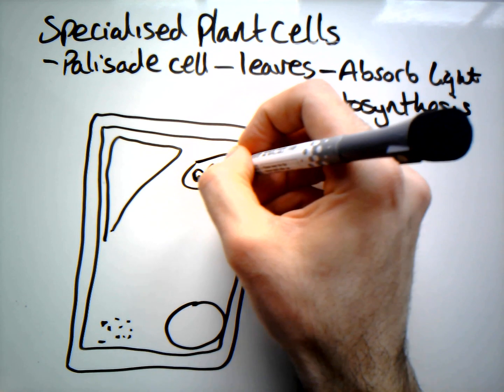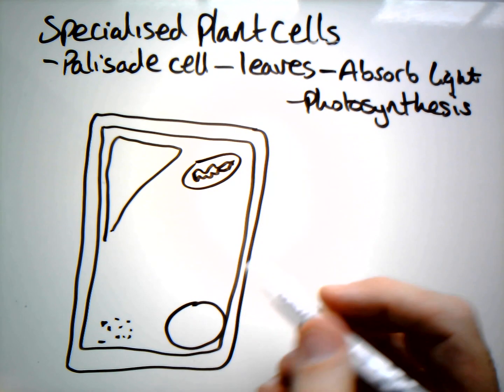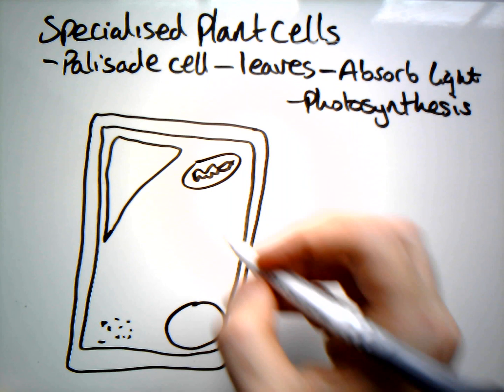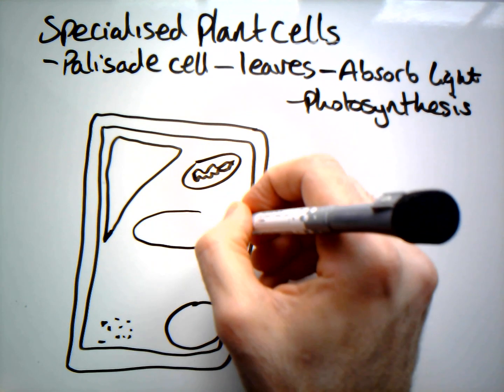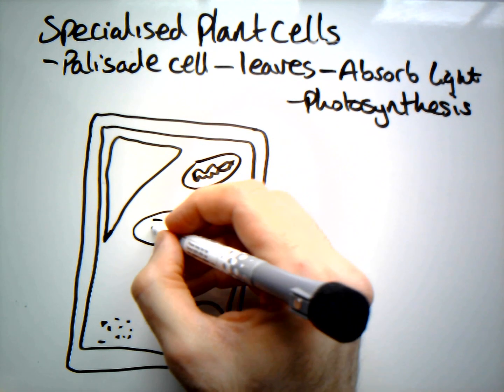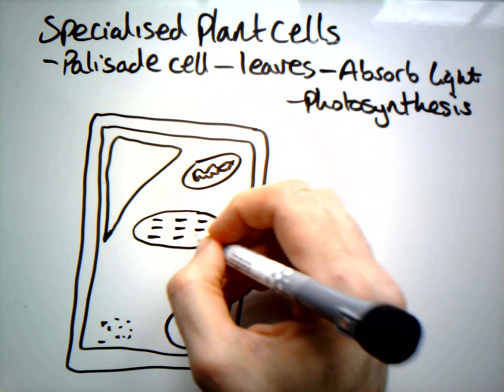So we've got our vacuole, our nucleus, our ribosomes, cytoplasm, cell membrane, and cell wall. And then the key feature is the chloroplast.